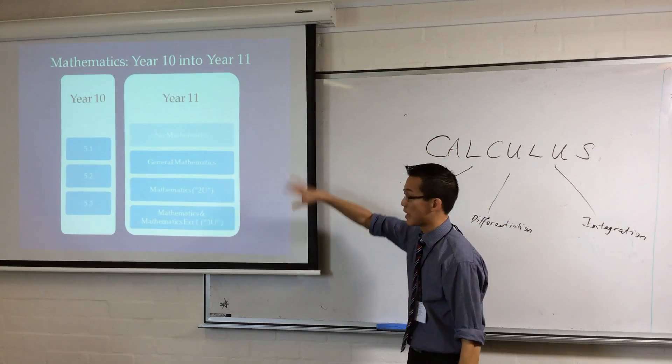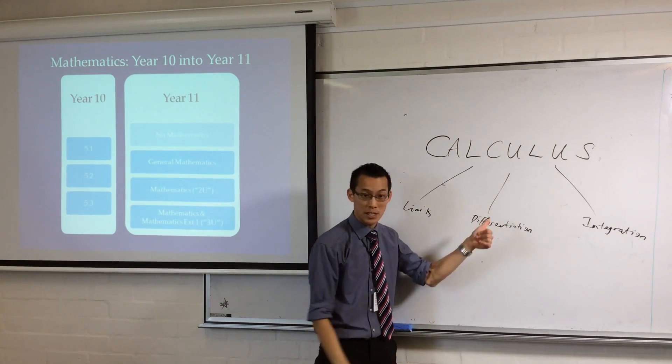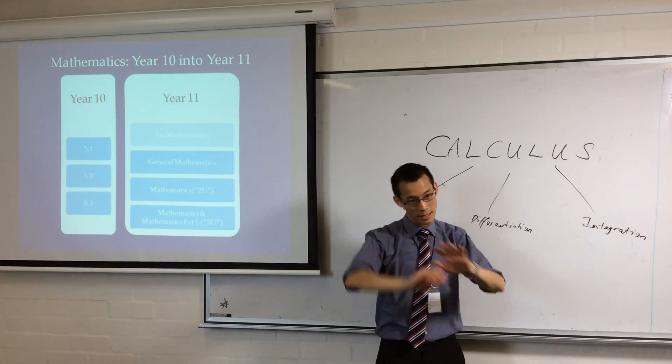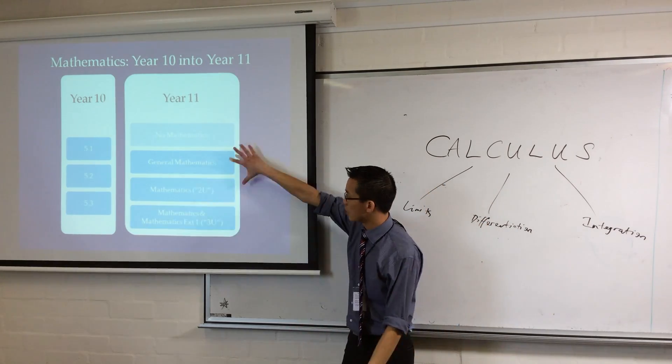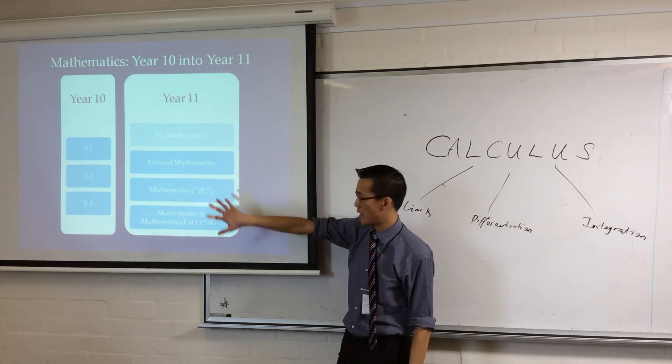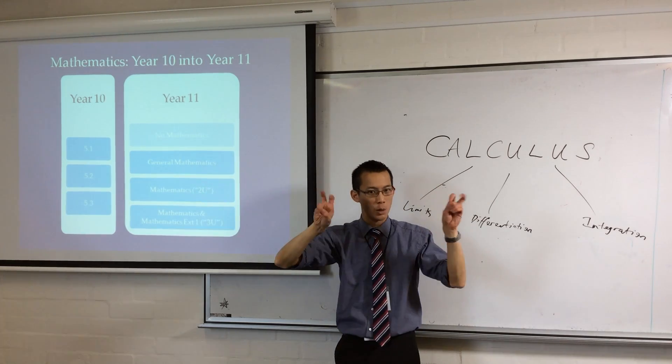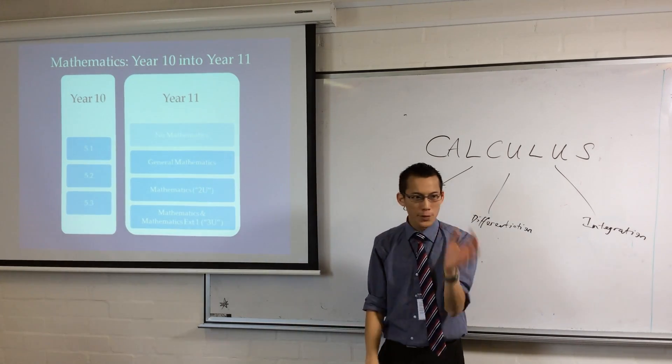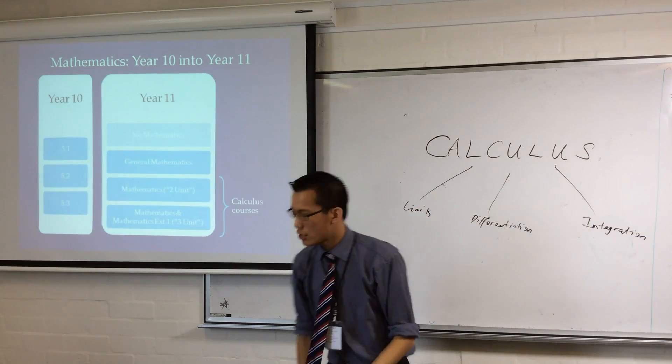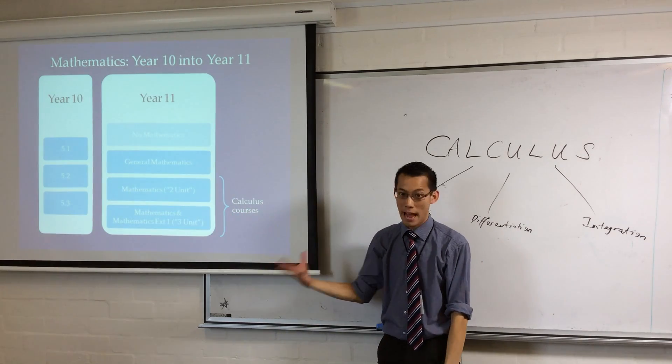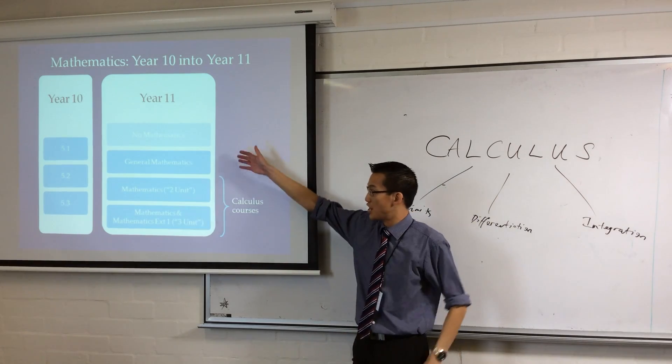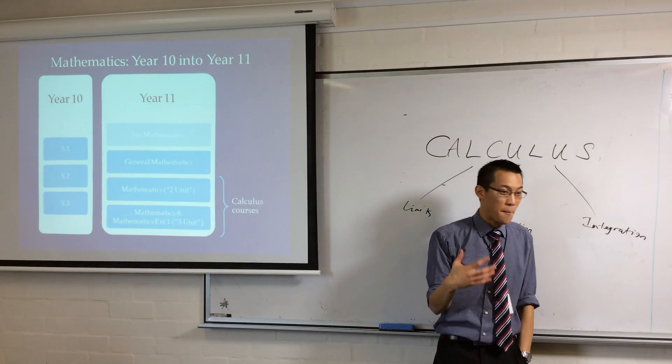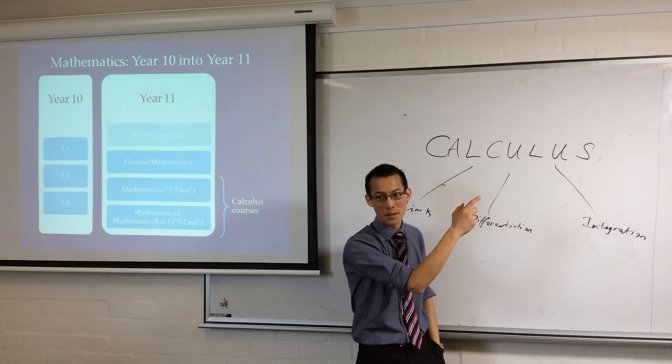You can go to the Board of Studies, that link I showed you before, and actually look up the syllabus documents and find out what these are. Here's the thing you need to get. Look at these three - general maths, two-unit and three-unit, that's what they're sort of colloquially called. The difference between them is calculus. In fact, two-unit and three-unit are really, their actual names are, they're called the calculus courses. General maths is just a shorthand way of saying maths without calculus.